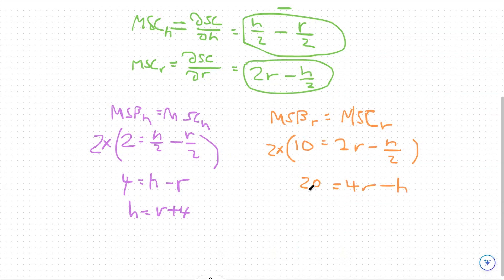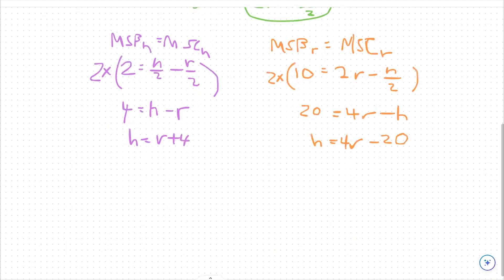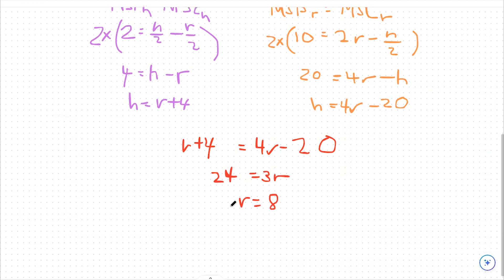From there, I'm going to add h to both sides and subtract 20 from both sides. And I'm left with h equals 4r minus 20. Okay, so now I've solved for h on both sides. Now my biggest step is going to be to equate the two together. So I can say r plus 4 equals 4r minus 20. I'm going to add 20 to both sides and subtract r from both sides. I get 24 equals 3r. So the number of roses that are socially optimal to be produced is 8.